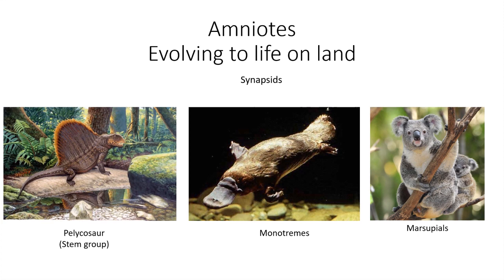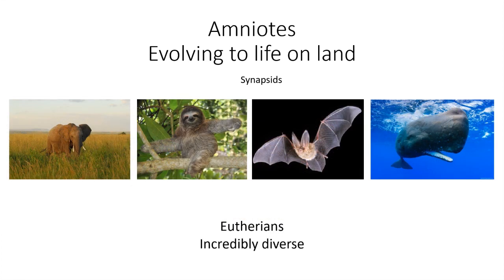The synapsids are all the modern-day mammals, and some ancient things like the pelycosaur on your left. They also include some ancient living animals called the monotremes — these things actually lay eggs — and the marsupials, which are of course well known in Australia and to some extent in South America as well. And this last group, the eutherians, means 'new beasts,' commonly known as placental mammals. We're going to stick with eutherians.